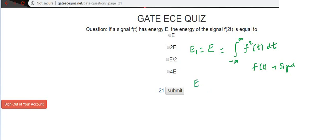The question is to calculate E2 which is energy of F of 2T. The integral now becomes minus infinity to infinity F square of 2T times dt. We need to relate E2 and E1. Let's call this as equation 1 and let's call this as equation 2.